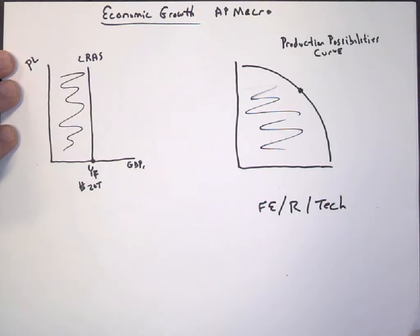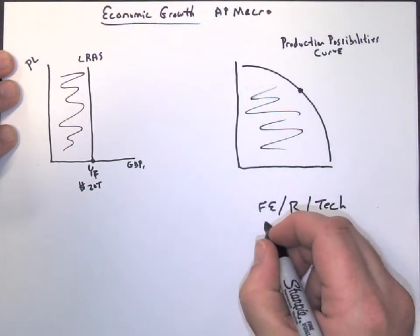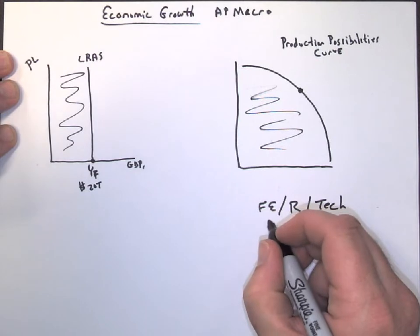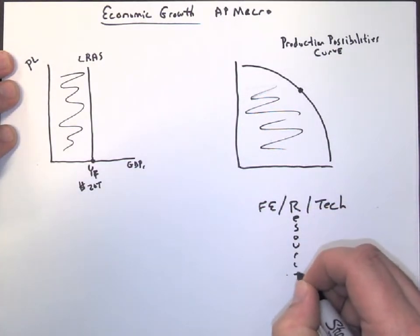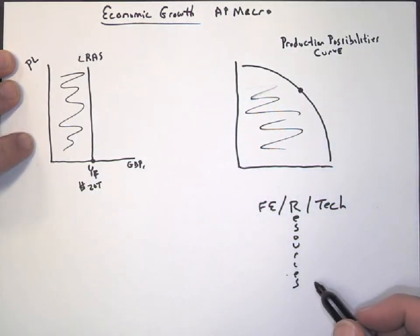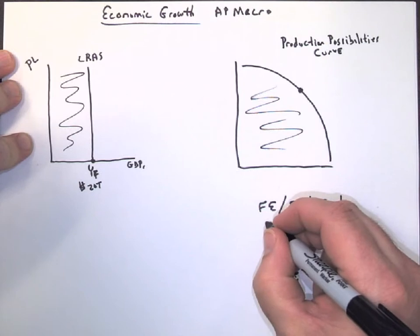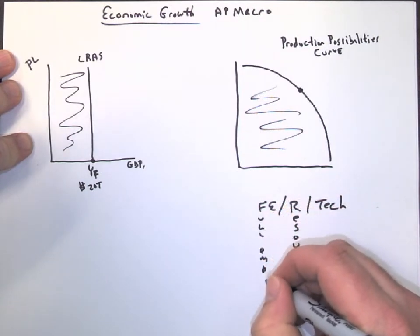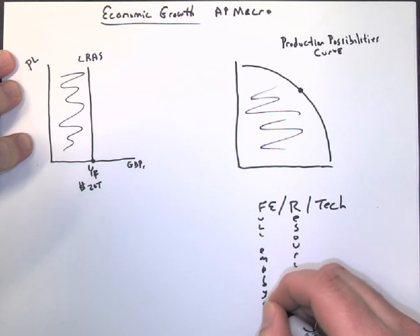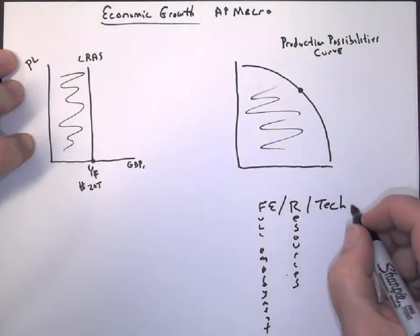Because remember, fertilizer makes stuff grow. So F-E-R-T. So this is our people, we're fully employed. This is our resources. That means our quality and quantity of resources is as good as it can be. These are our employees. Employment. Sorry about my handwriting. I'm trying to write very clear. I'm not very good at it.